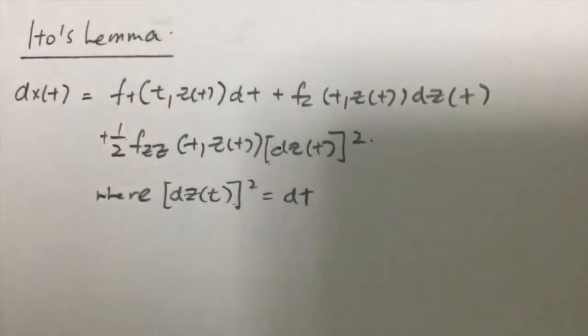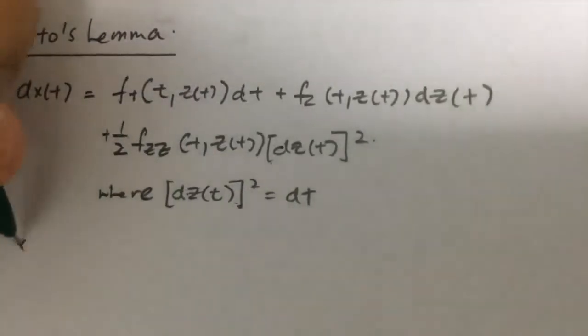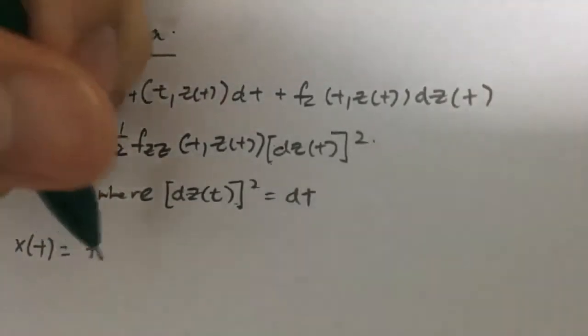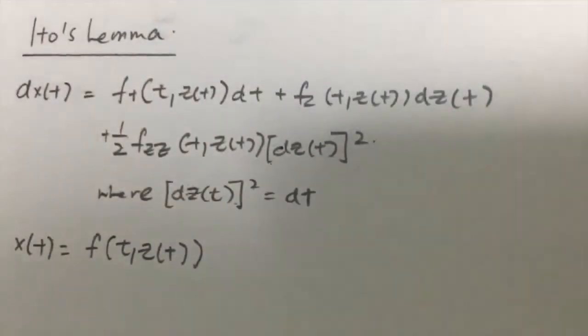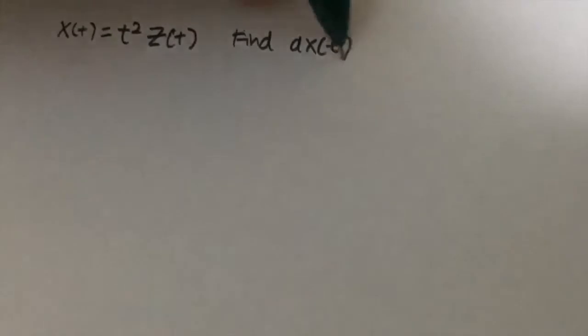So basically the idea of Ito's Lemma is, this is the Ito's Lemma by the way, given X(t) which equals X(t) is a function of t and Z(t), where your Z(t) itself is a standard Brownian motion and your dX(t) is these formulas. So now we're going to use Ito's Lemma to solve this question. Given that your X(t) is, let's say for example, t squared Z(t), and they ask you to find dx(t).